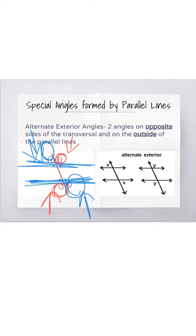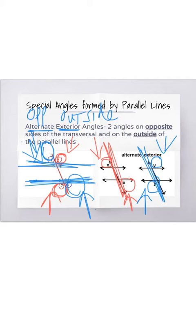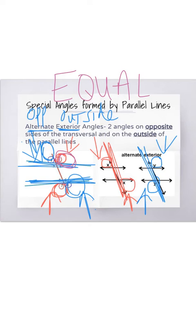You can see it more closely in the picture on the right, where the X angles are on the opposite sides of this transversal line, and they are on the outside of the parallel lines. Same with angles Y — these are on opposite sides of the transversal line and on the outside of the parallel lines. Remember that alternate means opposite and exterior means outside. Alternate exterior angles are equal, so if one is 160 degrees, the other one is 160 degrees.